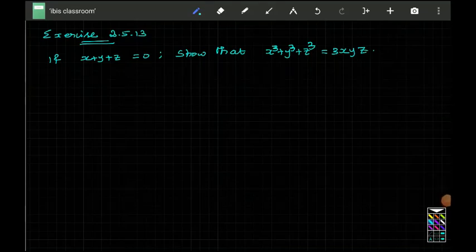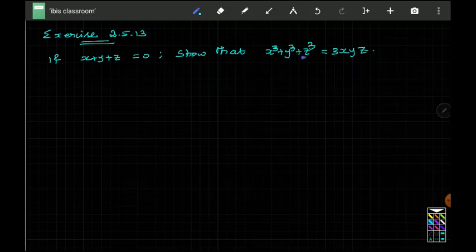Question number 13 of exercise 2.5 is that we need to be showing x cube plus y cube plus z cube is equal to 3xyz provided x plus y plus z is 0.